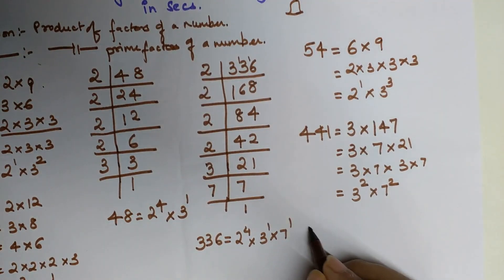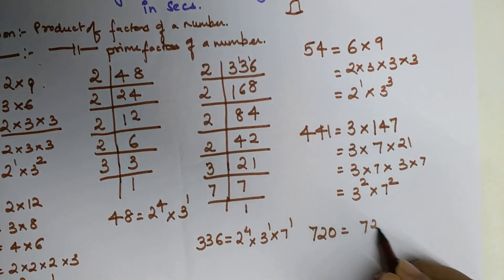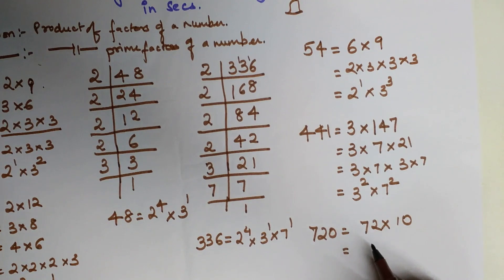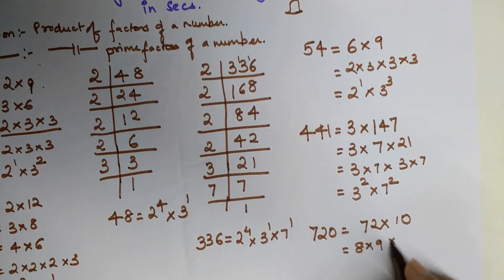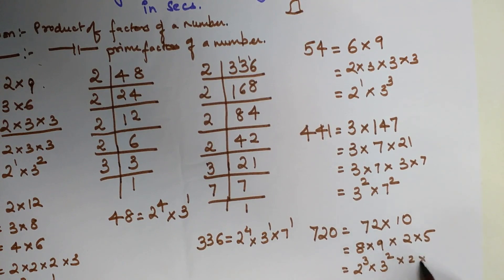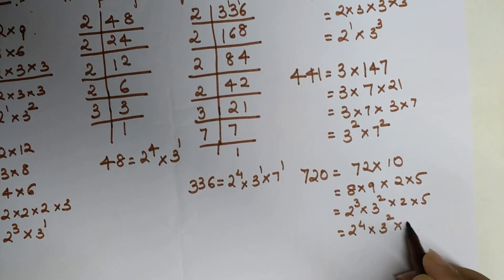Now let's check 720. This is very easy. We can directly write 720 as 72 into 10. We represent 72 using its biggest factor: 8 into 9. And 10 can be written as 2 into 5. Now 8 is 2 cubed and 9 is 3 squared. So we have 2 cubed from the 8, plus one more 2 from the 10. The final answer is 2 raised to 4 into 3 raised to 2 into 5 raised to 1.